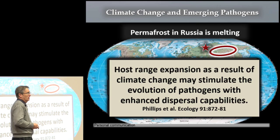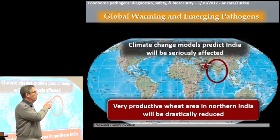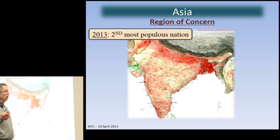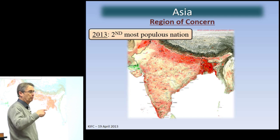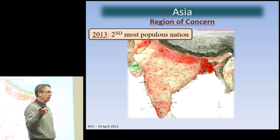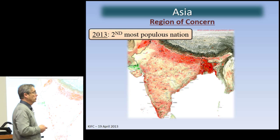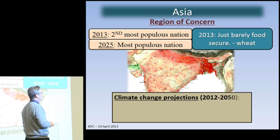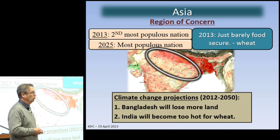One of the big areas of concern is India — because it's the second most populated nation now, but it's going to become the most populated within the next 10 years, surpassing China, whose population is predicted to decline from 1.3 billion down to 900 million this century. India's is going to continue to increase. One challenge is that they're just barely food secure now. And if you look at all the climate change models, the primary wheat production belt will no longer sustain wheat if these models are even close to being correct. People will migrate and that will create tensions.